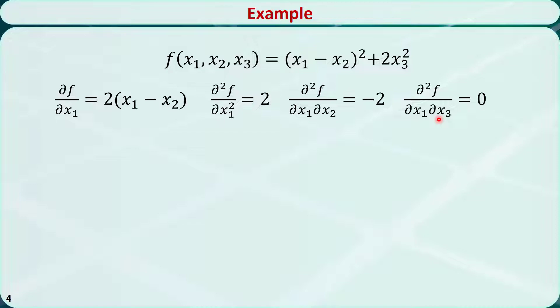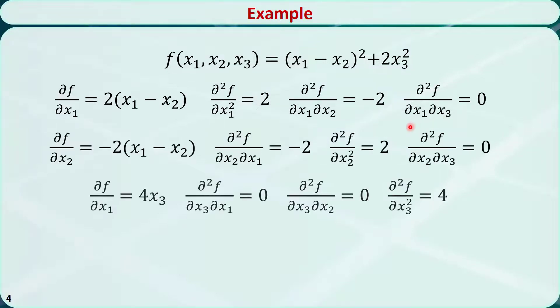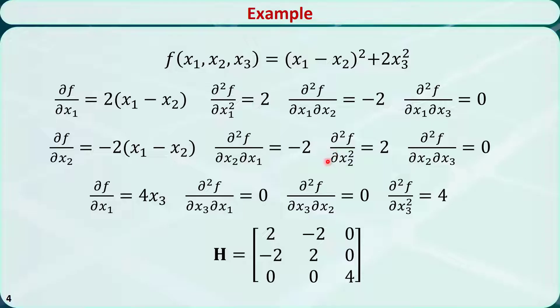This is the first row of the Hessian matrix. Similarly, we can calculate the second and third rows of the Hessian matrix. Finally, this is the Hessian matrix of this function.